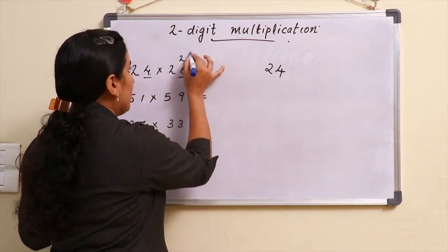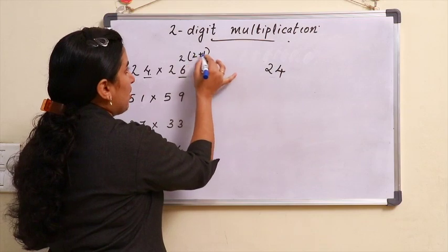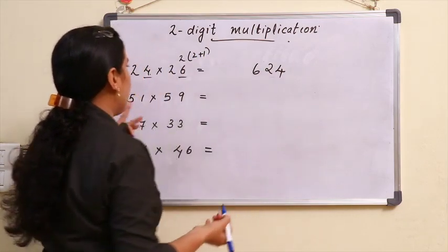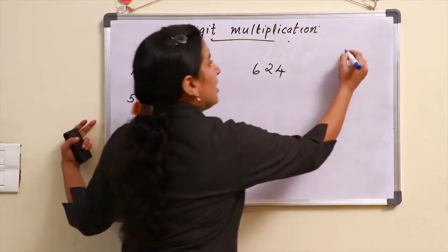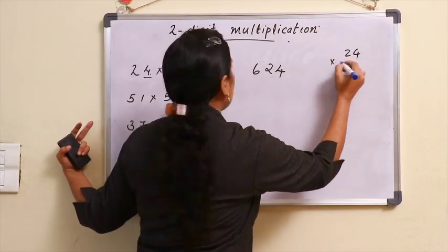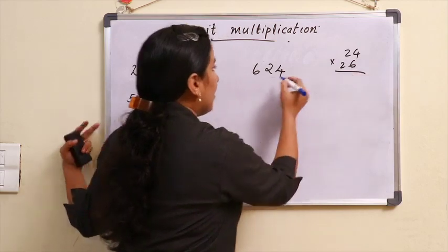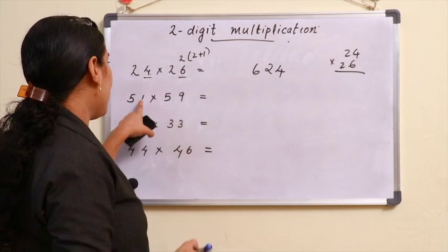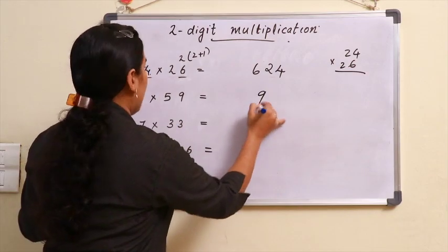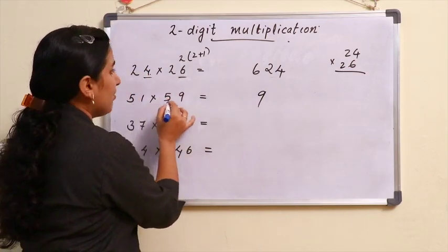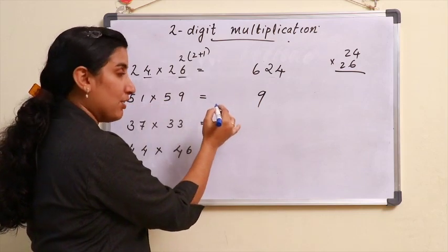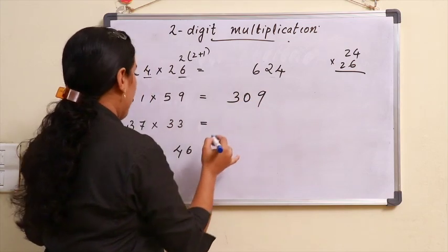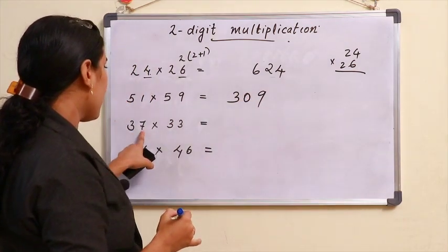2 × 2 plus 1: 2 plus 1 is 3, and 3 × 2 is 6. So we get 624. We have 10's in the place of 10's. Now let's take a look: 1 × 9 is 9. Then 5 × 5 plus 1, 5 × 6 equals 30. Also 6 × 8 and 8 × 9.